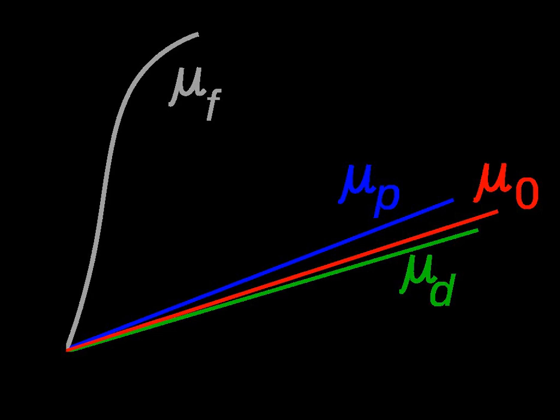In electromagnetism, the auxiliary magnetic field H represents how a magnetic field B influences the organization of magnetic dipoles in a given medium, including dipole migration and magnetic dipole reorientation.